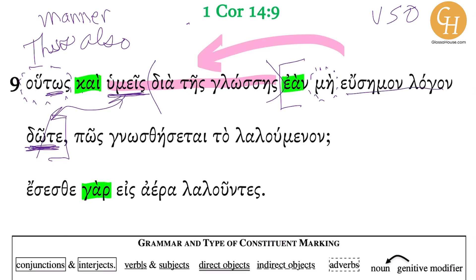And then you have the eusemon logon — double underline. So logon is 'word' — this is accusative case, direct object of dote. And eusemon is really interesting. This is an adjective which is related to the word semeion, which means 'sign.' And eu is a prefix that means 'good.'